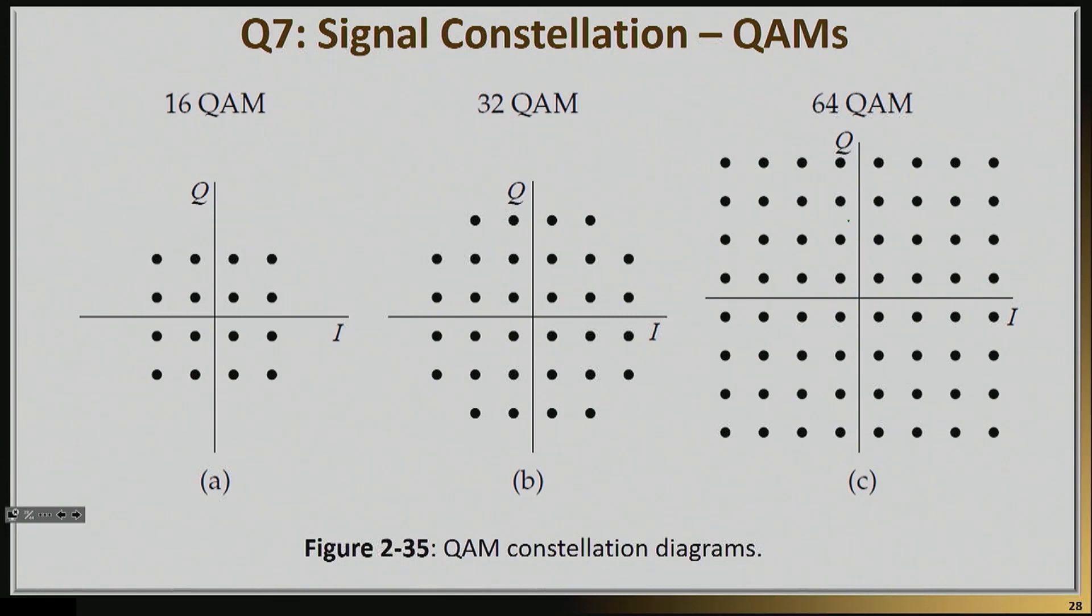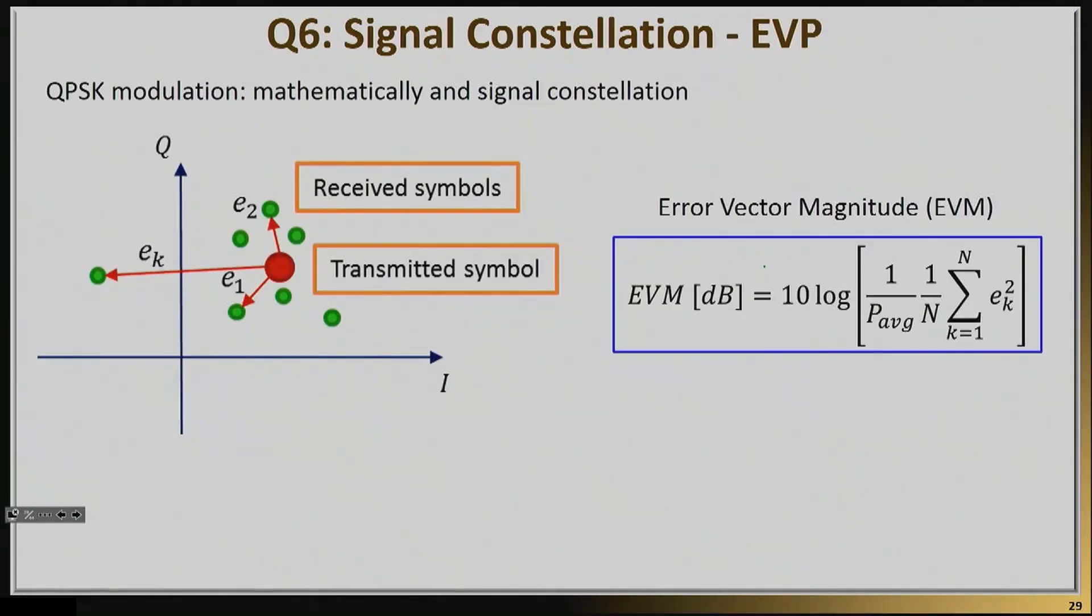This is a few other signal constellations you will see out there. And again, once you see enough of them, now you can start understanding, for example, why a system might actually go from a 64QAM to a 16QAM if the noise increase. It's because in the same space, I will put basically fewer symbols.